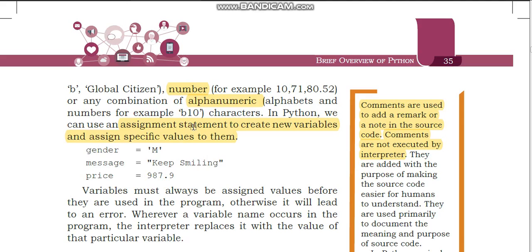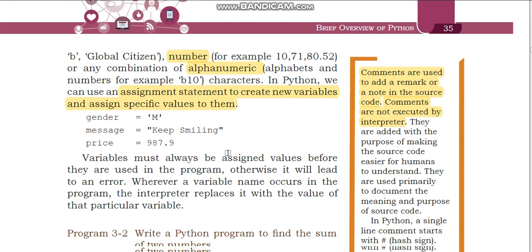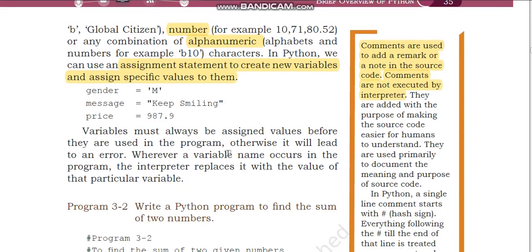A variable can be of these three types: strings, number, and alphanumeric. There are subdivisions also that we will learn in the next portion. In Python, we can use an assignment statement to create new variables and assign specific values to them. For example, you can see gender, message, price — these are names of variables.